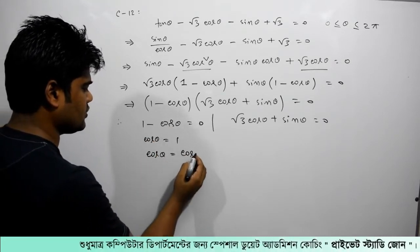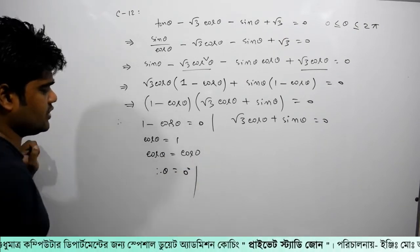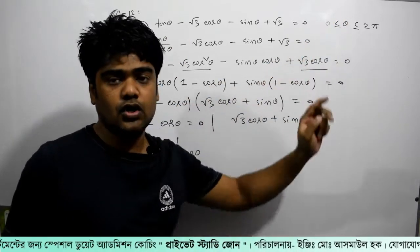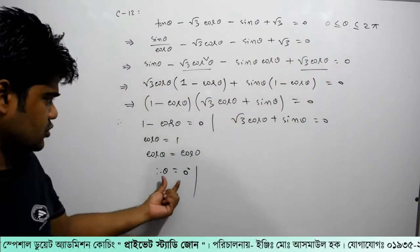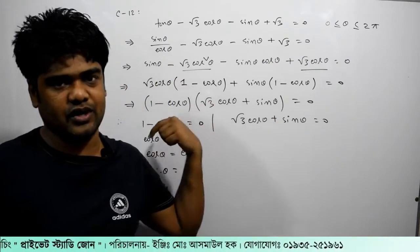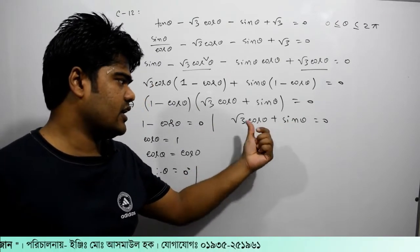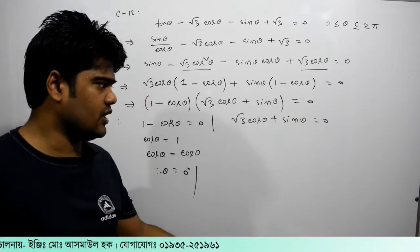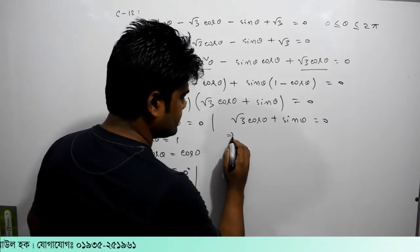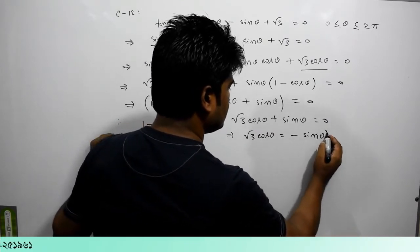Cos squared θ gives us 0 minus 1 cos θ minus 1. Then we write the function: root 3 cos θ is equal to minus sin θ.